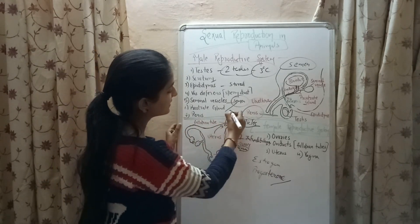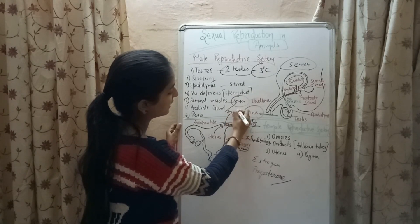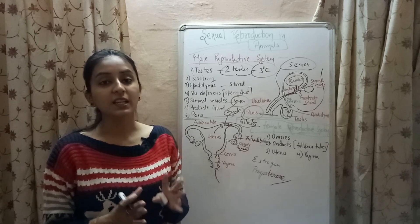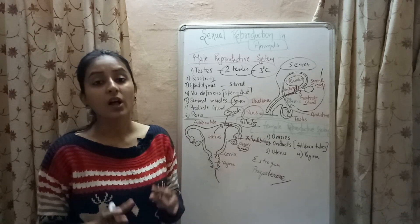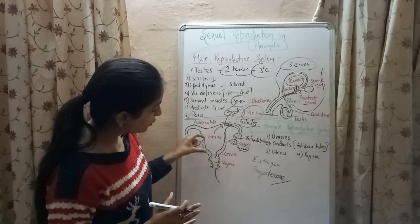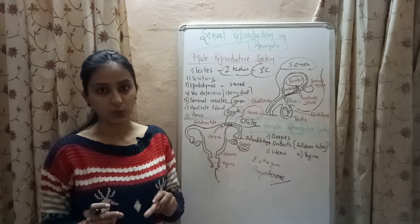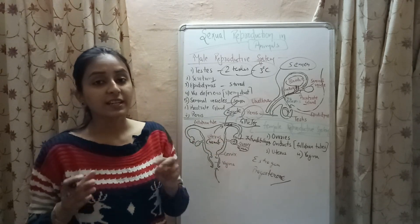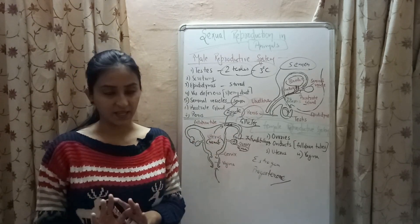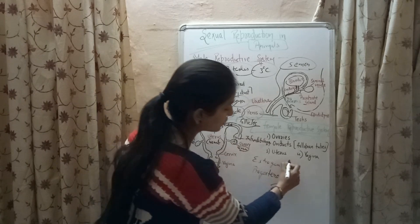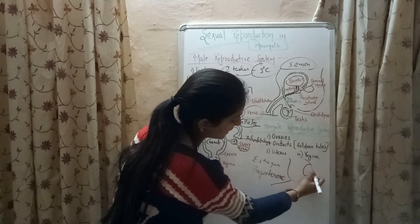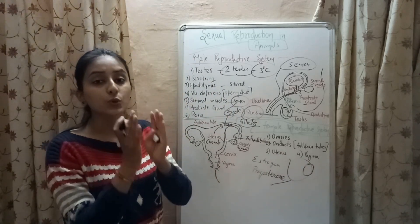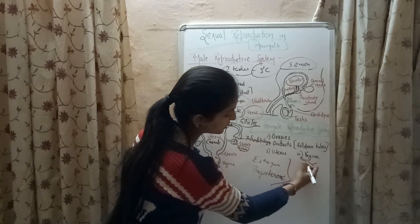After fertilization, the cell formed is known as the zygote. This zygote undergoes several divisions and forms a cluster of cells known as the embryo. The embryo passes to the uterus, known in common language as the womb, and development of the embryo takes place inside the womb. The attachment of the embryo to the uterine wall is known as implantation.